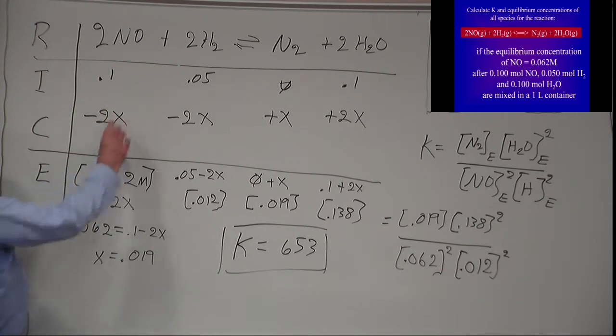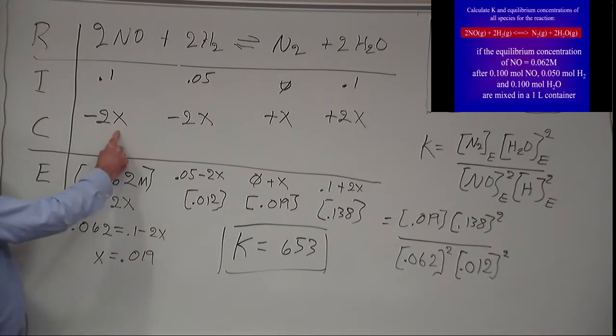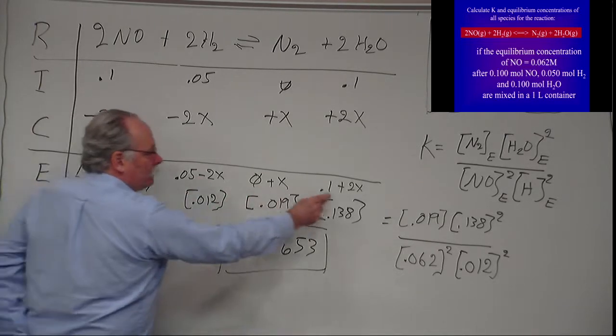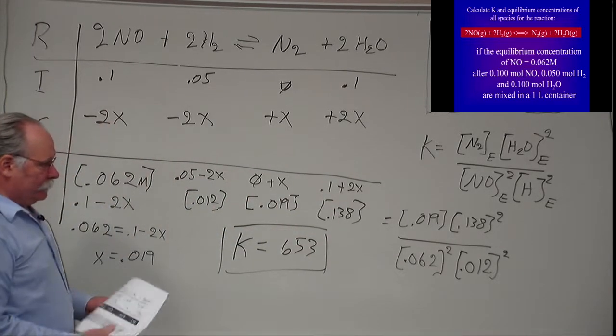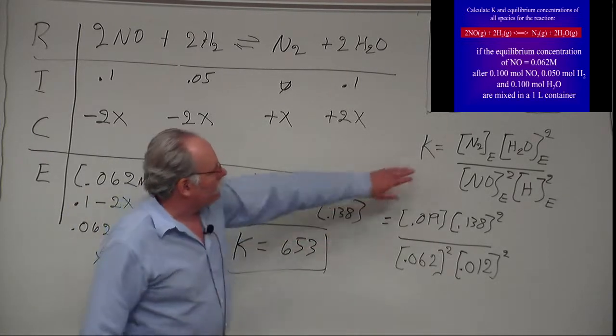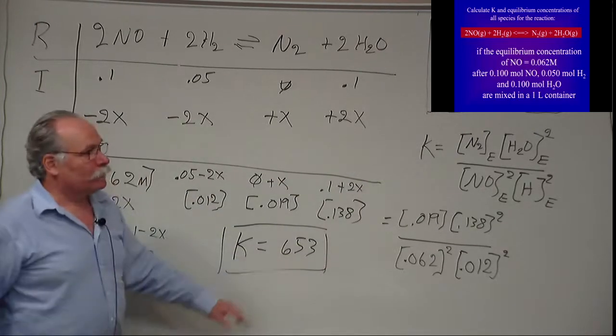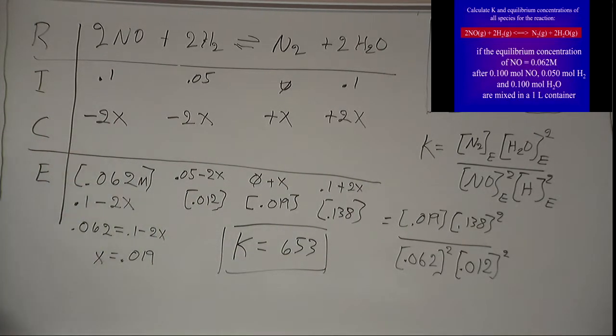Then you can say that the initial minus the change equals that equilibrium concentration, and that allows you to calculate X. Once you know X you calculate the equilibrium constants of the other species, and then you put the equilibrium concentrations into the equilibrium expression and you calculate the numerical value of K. It's as easy as that.